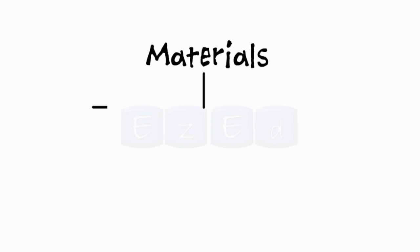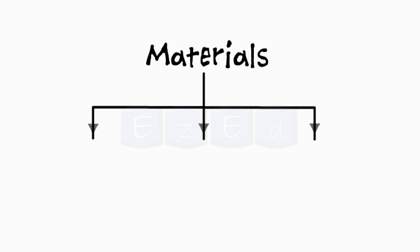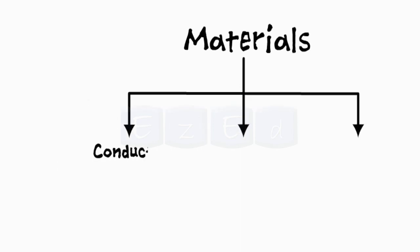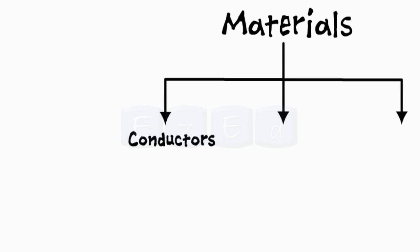Now let's first understand the materials. When we talk about materials in electronics, we compare them to their current carrying capacity and they can be classified into three types, namely conductors, semiconductors and insulators.